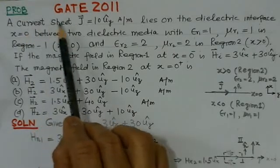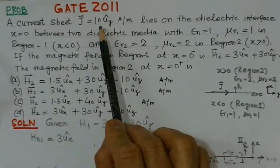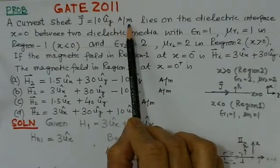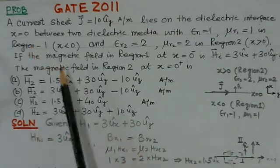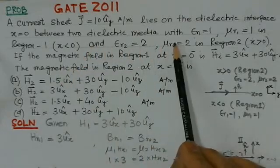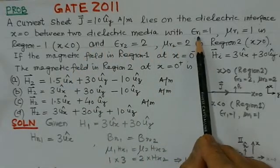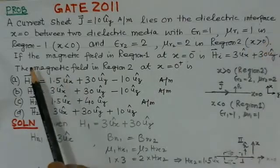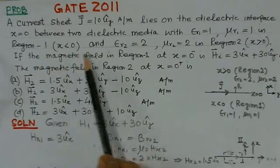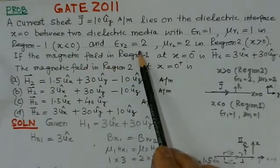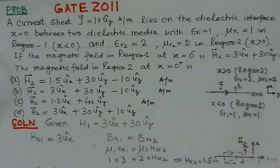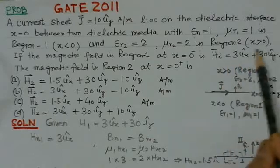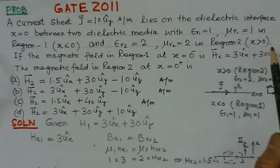The problem states: a current sheet J = 10u_y amperes per meter lies on the dielectric interface x = 0 between two dielectric media with ε_r1 = 1, μ_r1 = 1 in region 1 (x < 0) and ε_r2 = 2, μ_r2 = 2 in region 2 (x > 0).